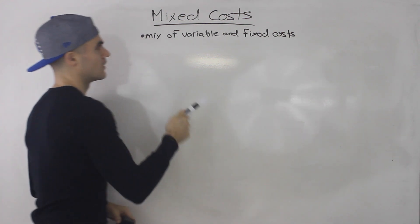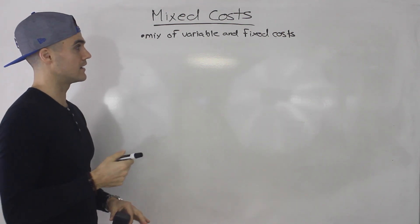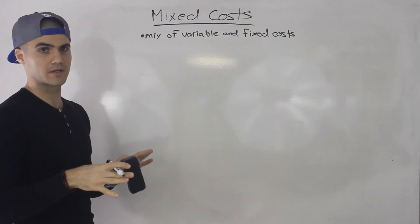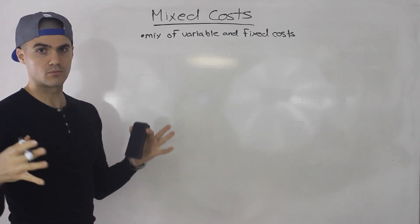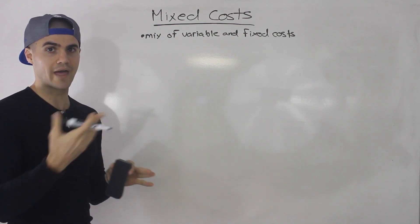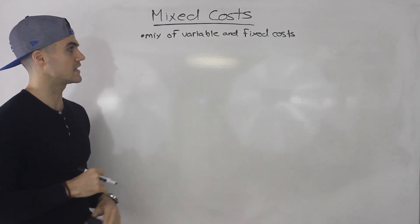When I say mixed costs, basically what I mean by that is a mix of variable and fixed costs. Before, when I talked about variable and fixed costs, I basically described both of them separately. But in this video, we're going to mix them up because obviously in a company you're going to have both variable and fixed costs mixed together.